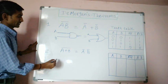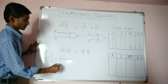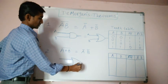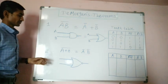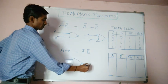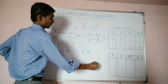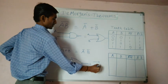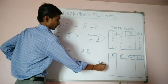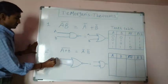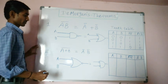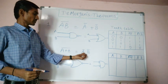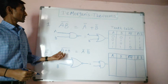Second theorem. A and B are two inputs with an OR gate and complement — a combination of OR gate and NOT gate — is equal to product of complements of two variables. Complement of sum of two variables equals product of complement of two variables. This is De Morgan's second theorem.